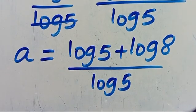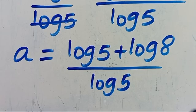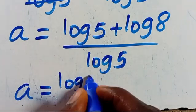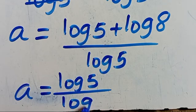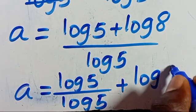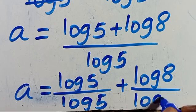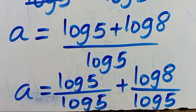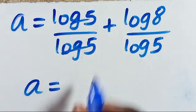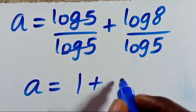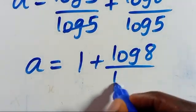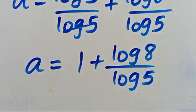So we are going to distribute this. We have A equals log 5 divided by log 5 plus log 8 divided by log 5. Now log 5 divided by log 5 equals 1, so A equals 1 plus log 8 divided by log 5.